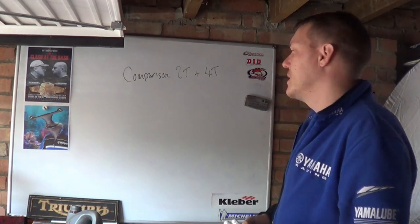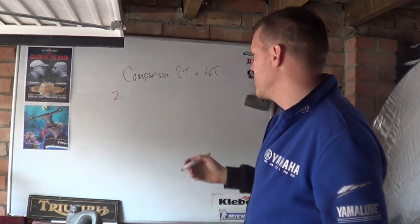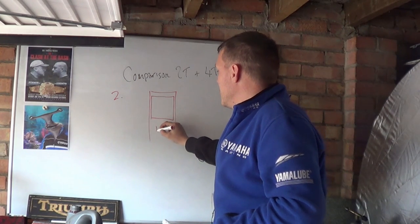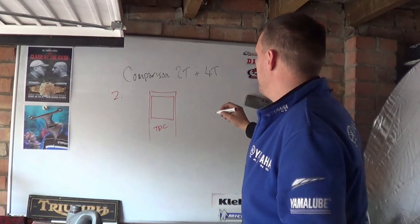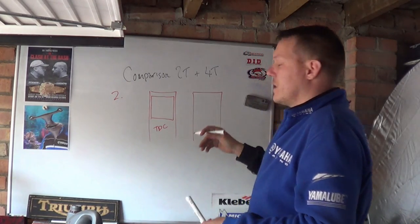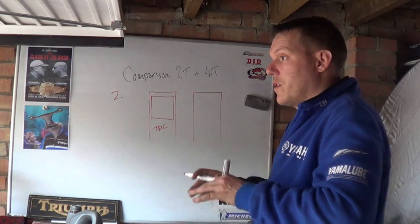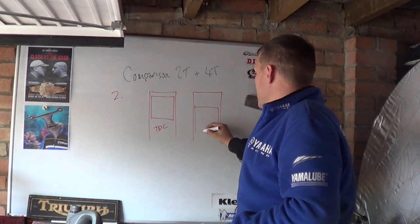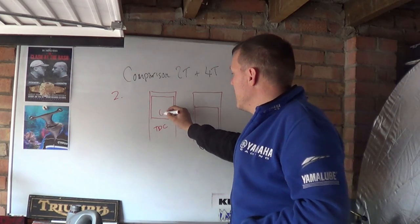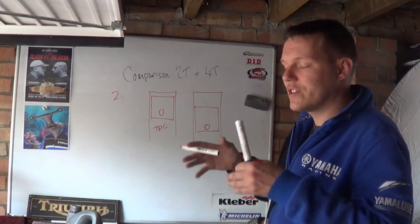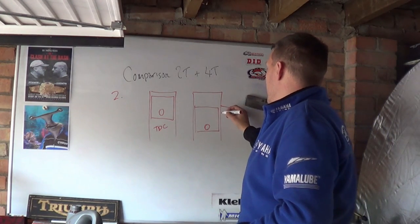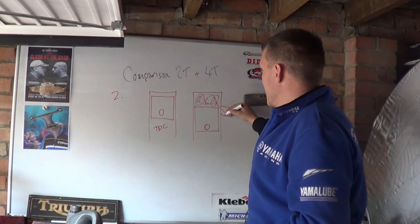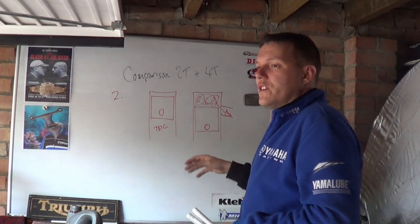Reason number two is the efficiency of combustion. If you have a two-stroke at the top of its stroke at TDC, when you combust your fuel inside your combustion chamber, the temperature goes up, the pressure goes up, and it starts to apply pressure to all these surfaces. But when the piston starts traveling down its stroke, you then open your exhaust port and a lot of the hot gases that are still applying pressure start to escape out your exhaust. So its volumetric efficiency isn't very good.